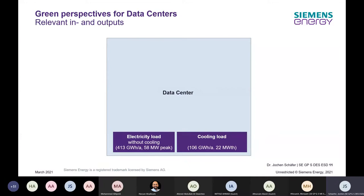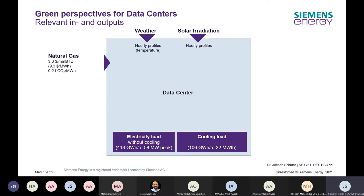When starting such a process, it's always important to have a common understanding of the relevant inputs and outputs. The data center has an electrical load and a cooling load that must be met at each point in time. We consider significant solar potential, weather conditions — especially ambient temperature's impact on the chiller's coefficient of performance — and natural gas price along with its emission factor.